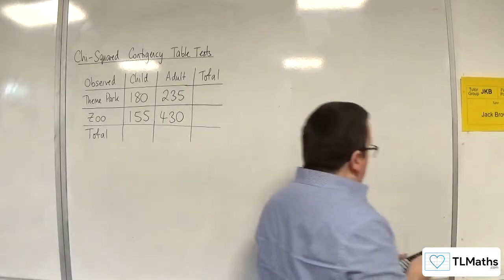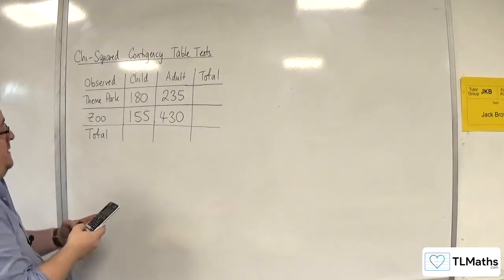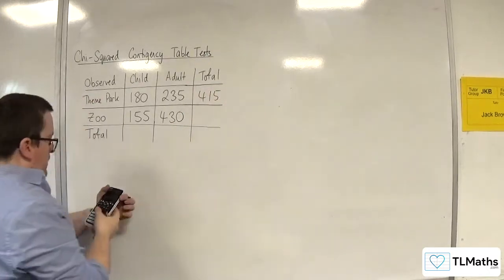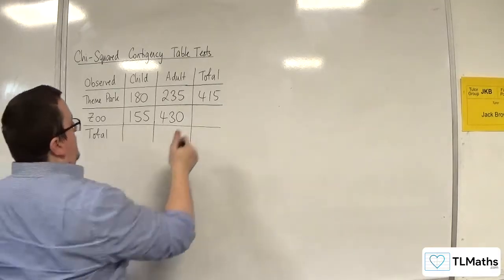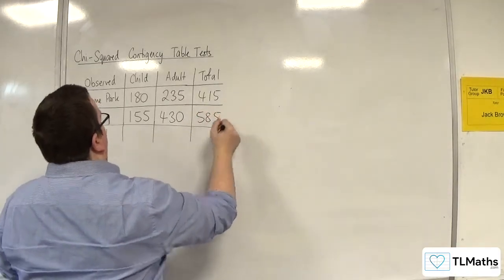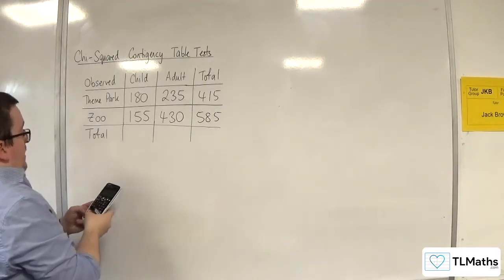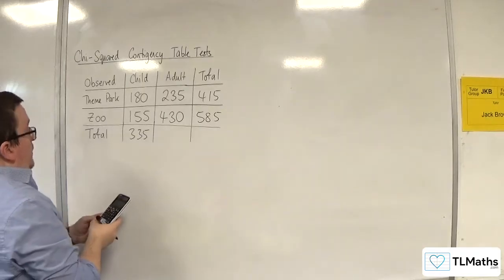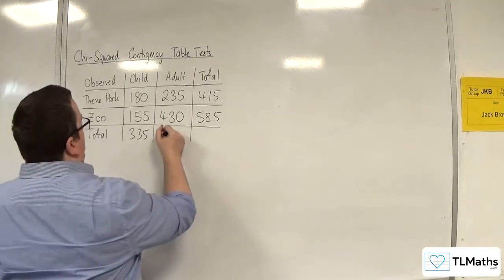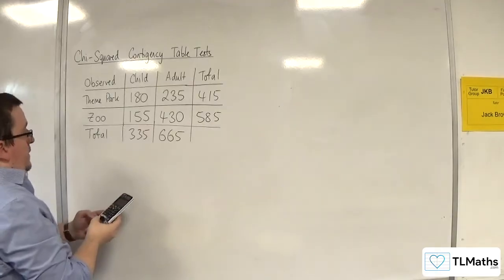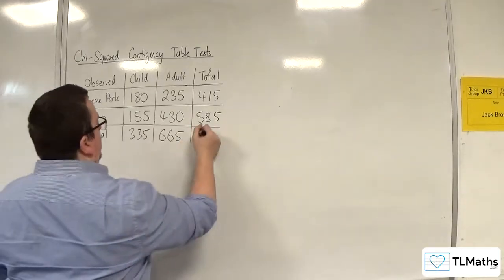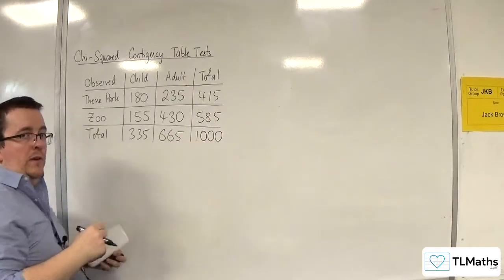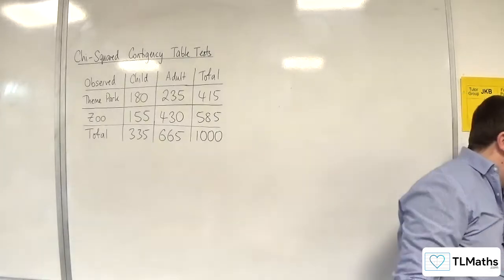So we get 180 plus 235, so 415. We've got 155 plus 430, so 585. We've got 180 plus 155, so 335. And 235 plus 430 is 665. And then when I add 665 and 335 together, we get 1000. And just double check, 415 plus 585 is 1000 as well. So that's the first thing that we do.